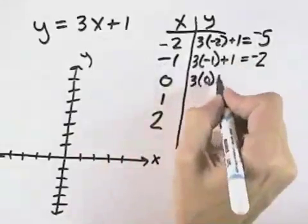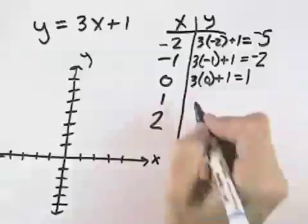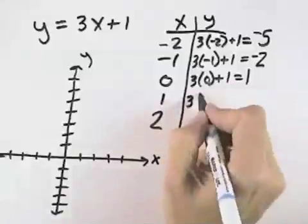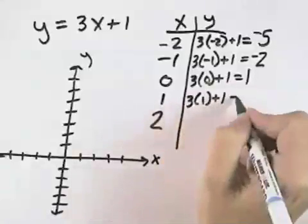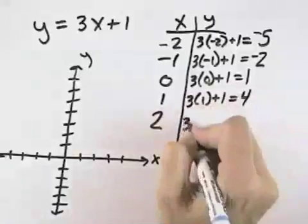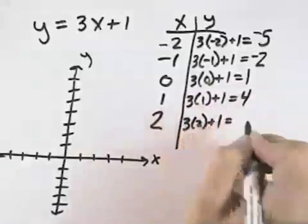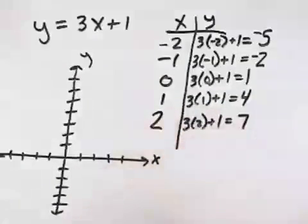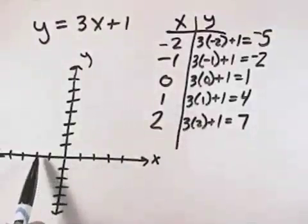Continuing, 3 times 0 plus 1 will give us 1. 3 times 1 plus 1 is 3 plus 1, or 4. And finally, 3 times 2 plus 1 is 6 plus 1, or 7.